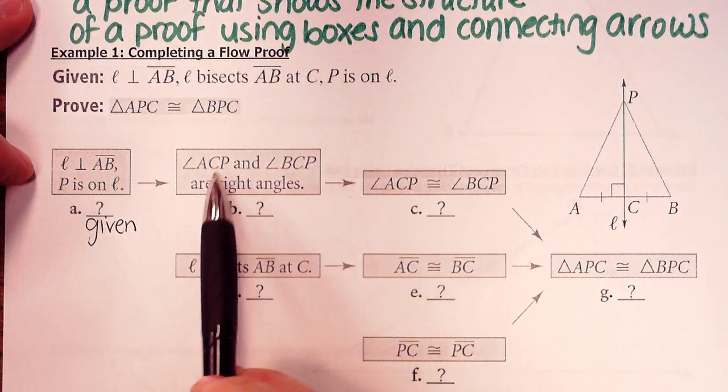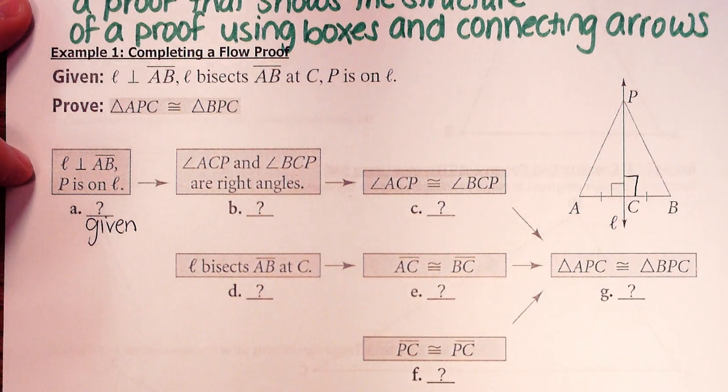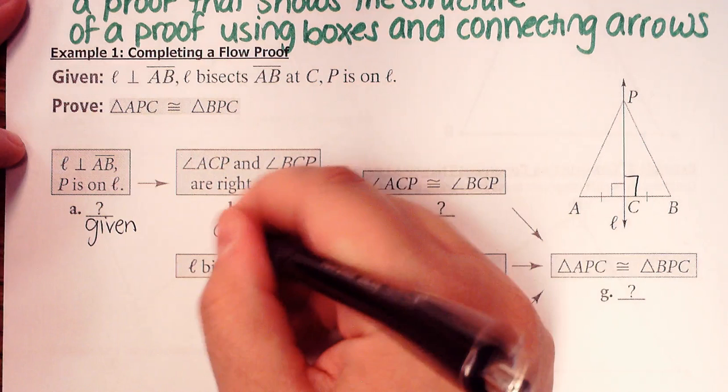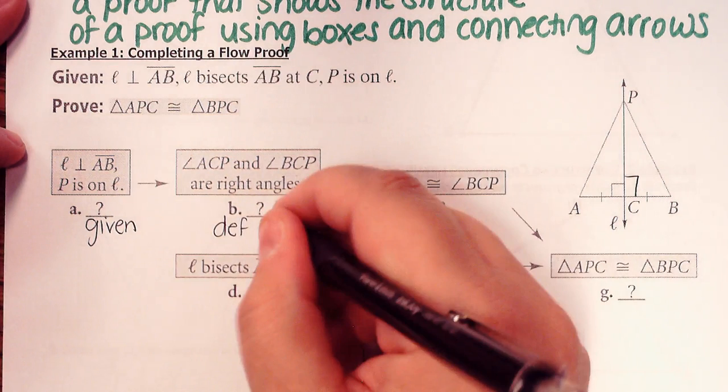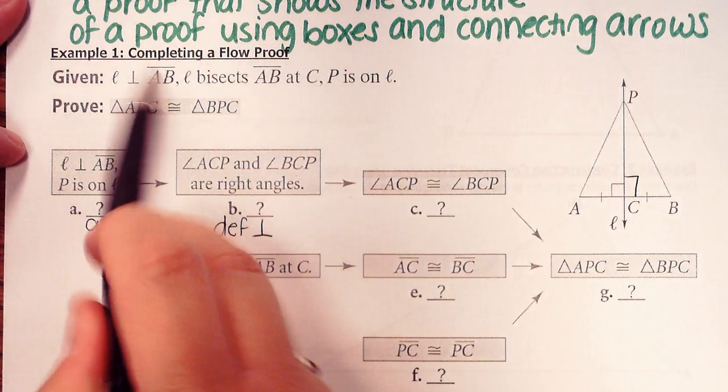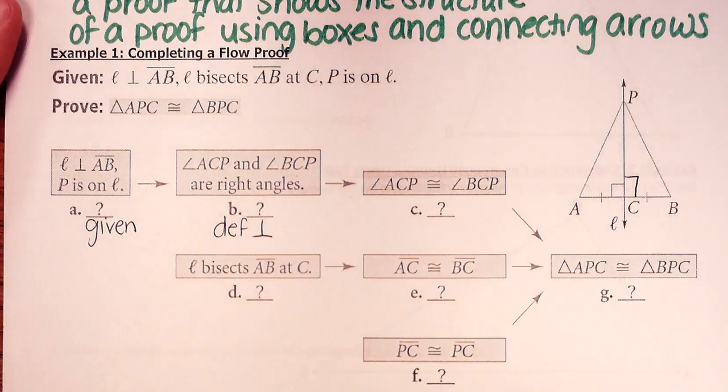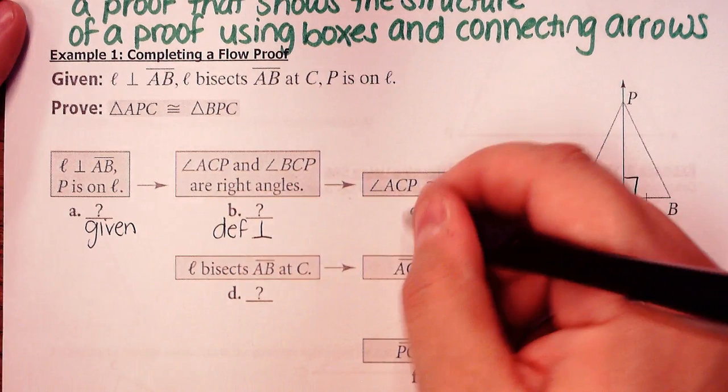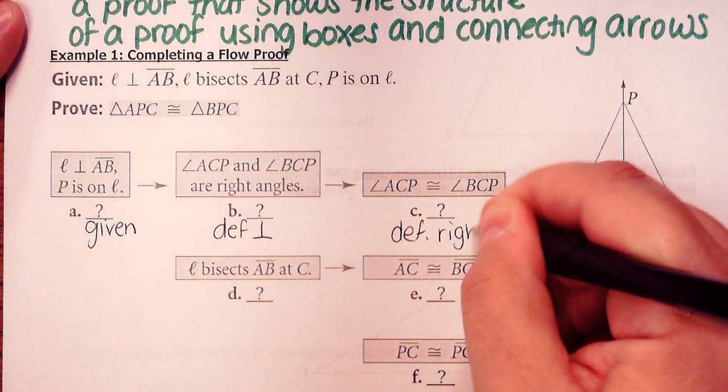Okay, now, it says angle ACP and angle BCP are right angles. So I would say, I would take that by the definition here, where we have the perpendicular information and the given information. I know those are right angles because it told me that it was perpendicular there. And then it says those are congruent. Obviously, two right angles are congruent to each other, so I would just say that's definition of a right angle.